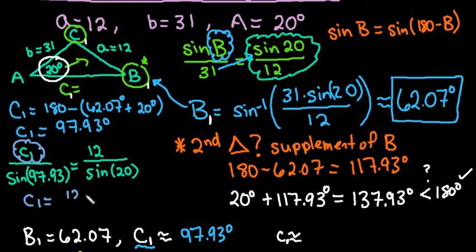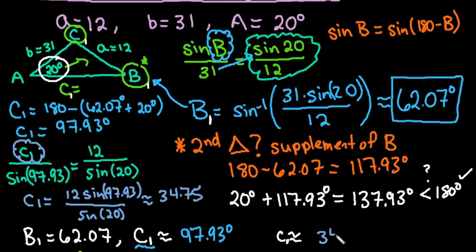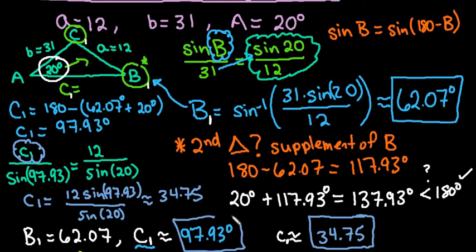So what I would do is I would just plug into my calculator, 12 times sine of 97.93. Make sure that this is in parentheses, divided by sine 20. And for time's sake, I'm just going to tell you what I got when I plugged it into my calculator. So for this one, I ended up with 34.75. And it makes sense that in this particular triangle that was formed, that C1, since it's opposite of the largest angle of 97.93 degrees, would be the longest side.